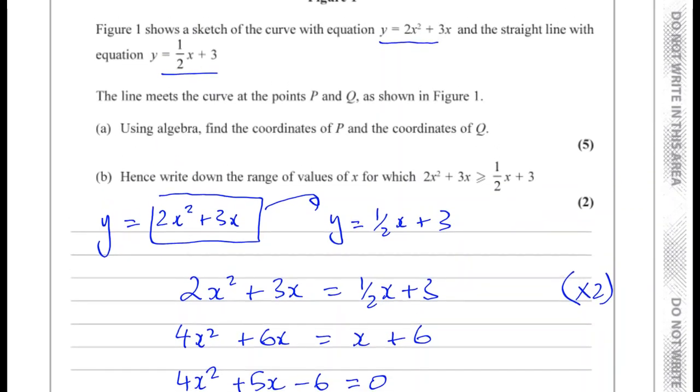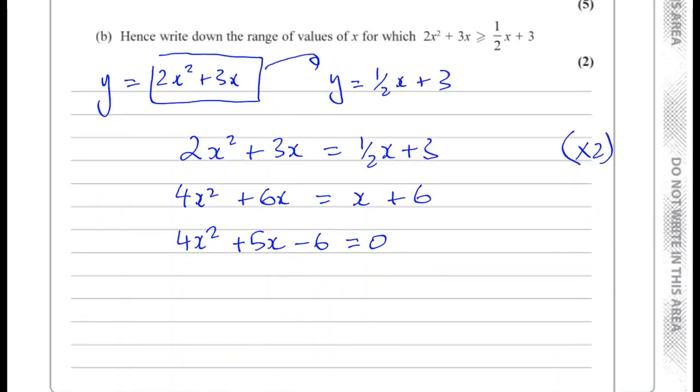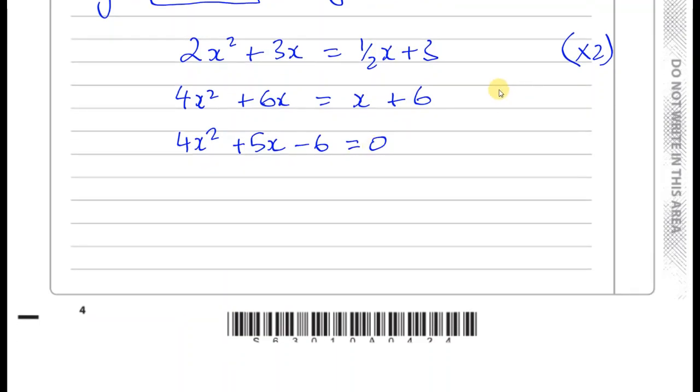Using algebra, find the coordinates of P and the coordinates of Q. So let's see if it's possible to factorize first. If it's possible to factorize, we can. If not, we can then use a formula or completing the square.